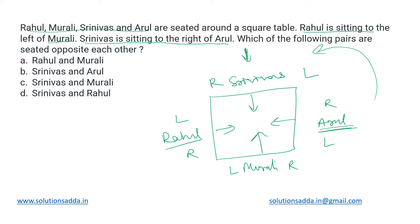Based on this arrangement, we need to determine which of the following pairs are seated opposite to each other. The two pairs given are Srinivas and Murali, and Rahul and Arul. From the diagram, the correct answer is option C — Srinivas and Murali.